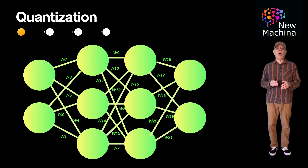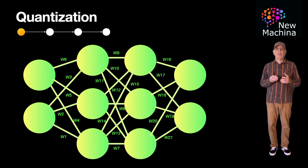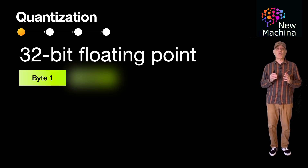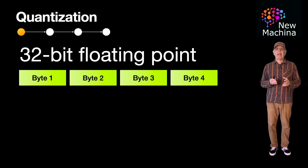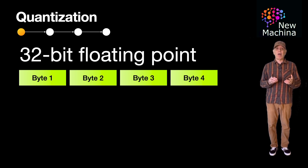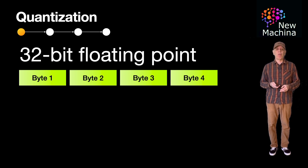So why am I talking about these parameters? I started with this to drive home the point that these LLM parameters in software are represented by floating point values. Typically, these are 32-bit floating point values. 32-bit floating point values are represented by 4 bytes, with each byte having 8 bits. In general, the larger the model, the more parameters and the more floating point values that are needed, which means you need more compute and memory to run the model.